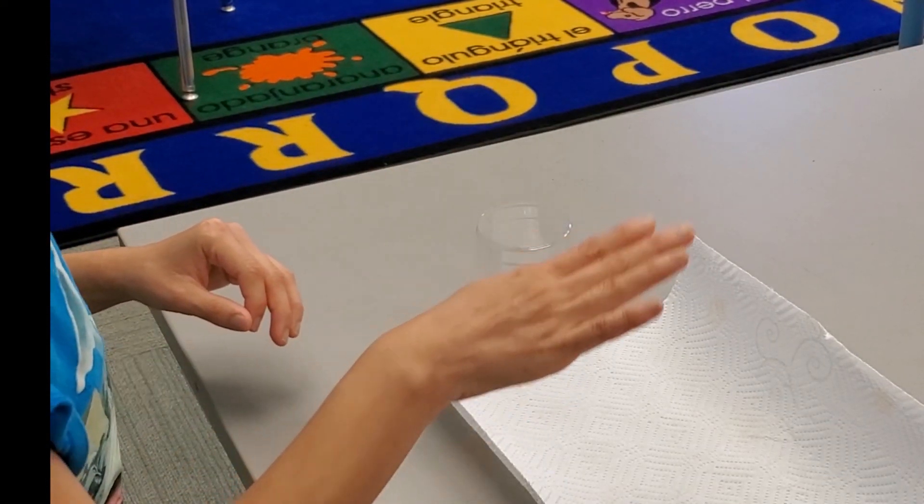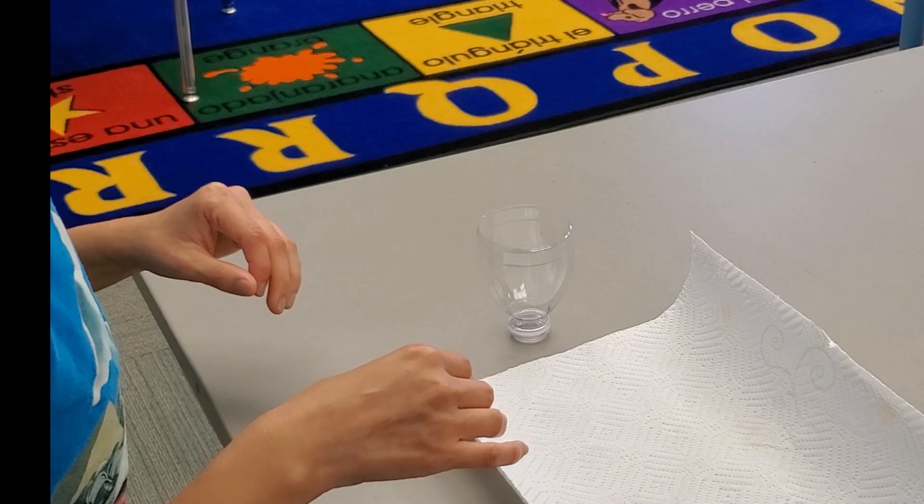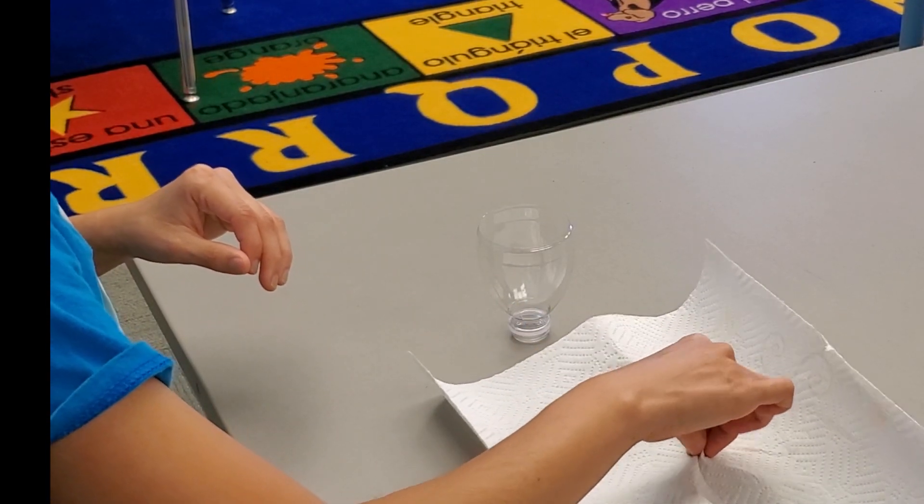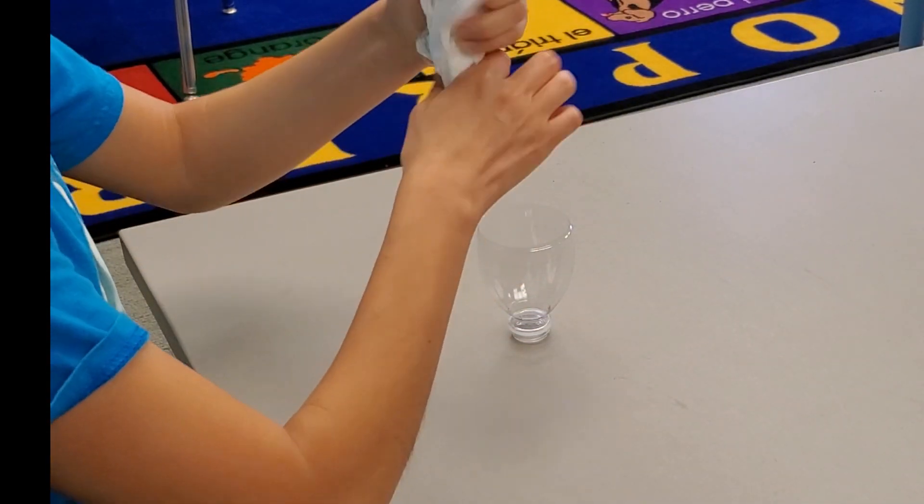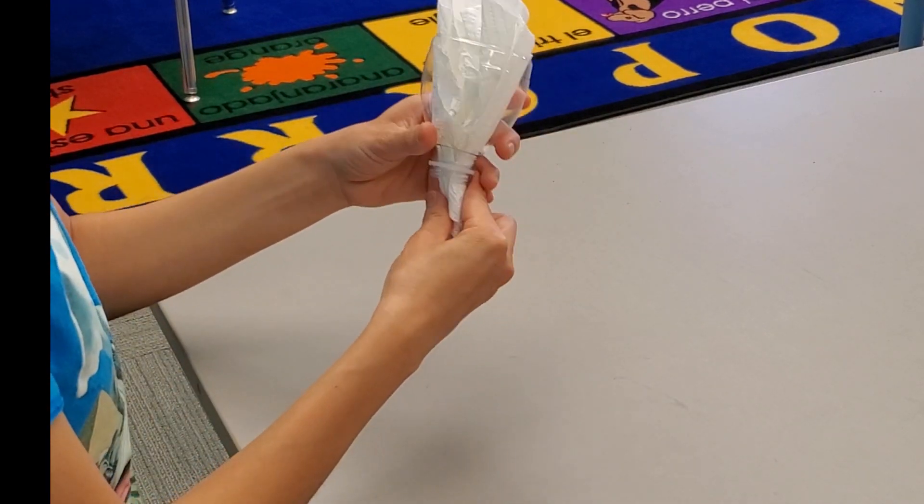Next, you're going to need a paper towel to hold the soil. What you want to do is pinch the paper towel like this, bring it through your funnel about two inches.